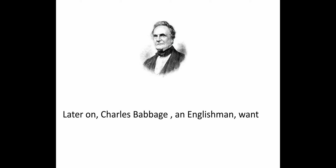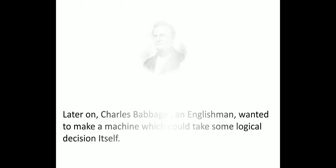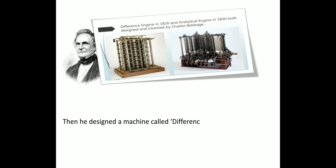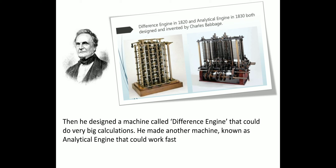To make a machine which could take some logical decisions itself, Charles Babbage thought that the machine needed logical calculations, like greater than and less than. He designed a machine called the Difference Engine that could do very big calculations. He then made another machine known as the Analytical Engine that could work faster.